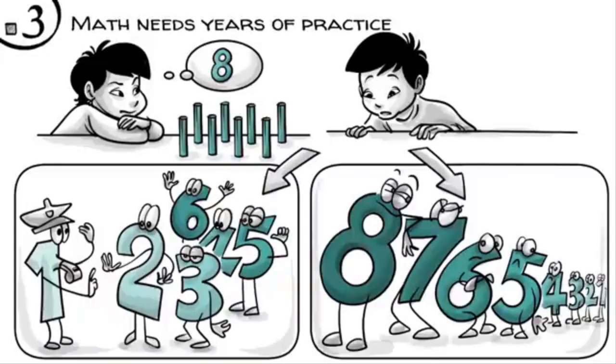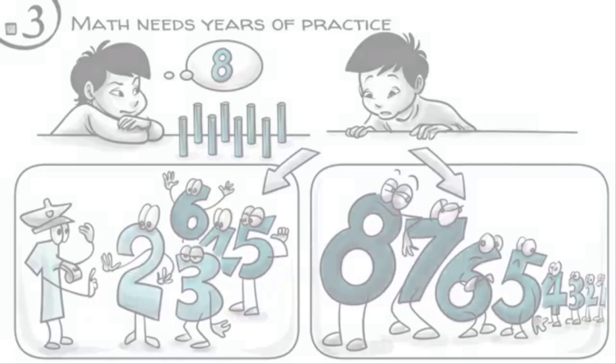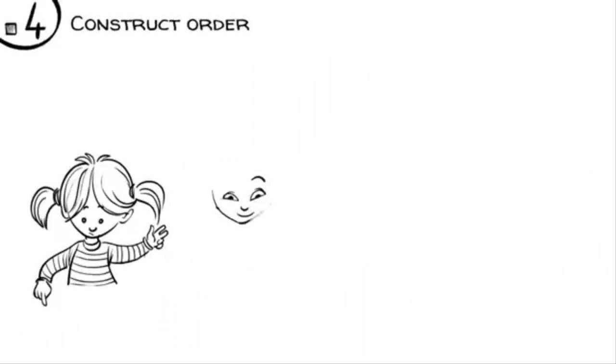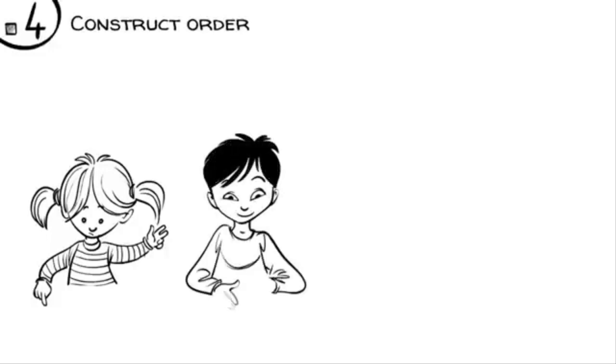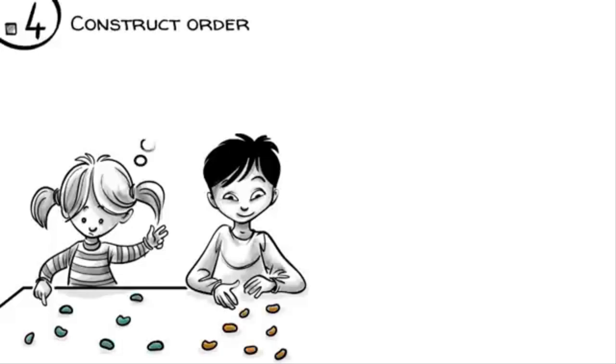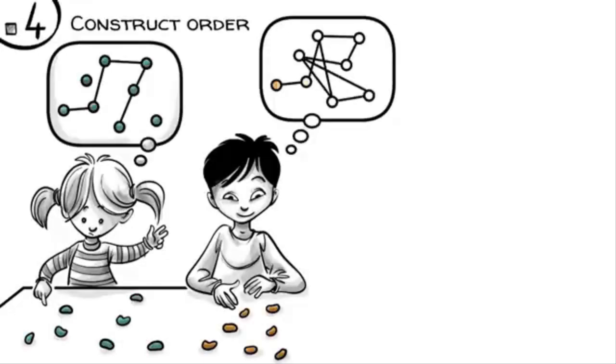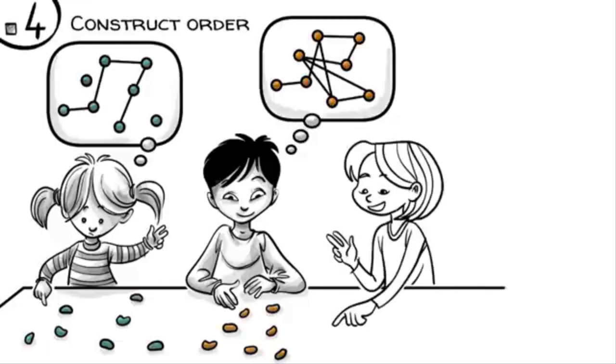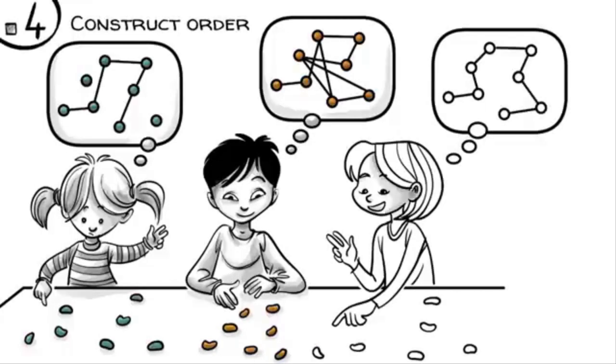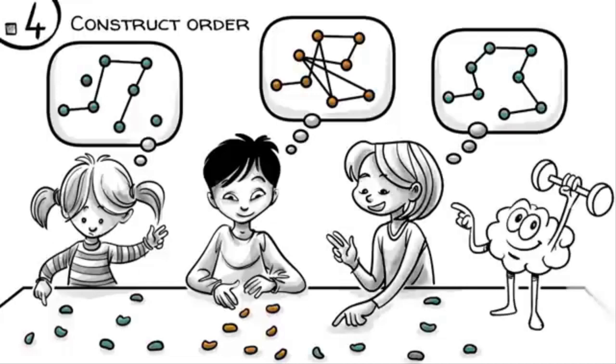Let's look at order first. When four-year-olds learn to count, most have trouble ordering objects in their heads if the things they count are unevenly distributed. Sometimes they skip objects, then they count the same ones twice. To do it right, children have to learn how to construct order in their heads. This seems easy, but actually takes our brains a lot of practice.